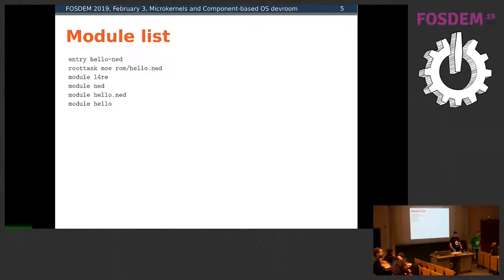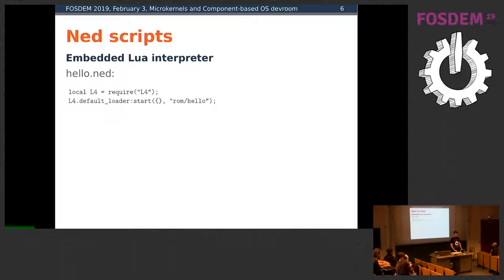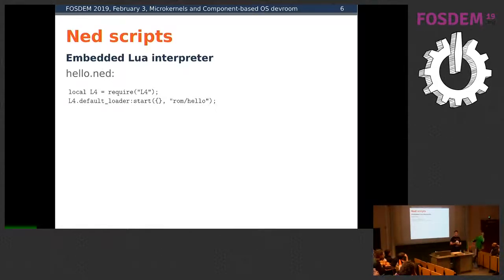Now it's unmuted. This is the list of components for the Hello World demo. We see a couple of interesting things that will also be shown later. One of them is a so-called NetScript, which is a Lua script used by our init process called Net, which embeds a Lua interpreter to basically configure the system, spawn new processes, and interconnect them via capabilities.